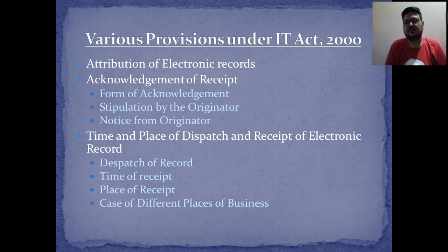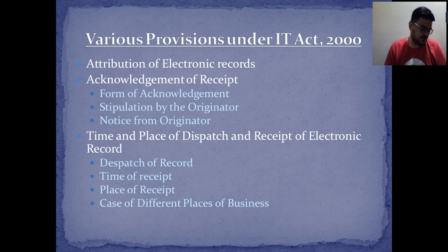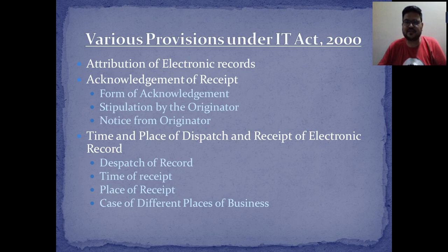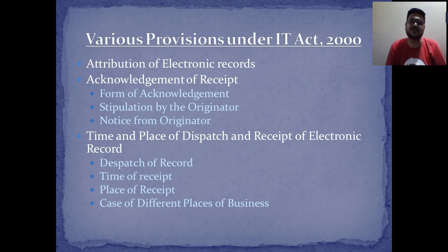These are certain forms that have to be filled when doing any online transaction — whether a purchase or sale. If you are making any transaction online, you have to make arrangements for acknowledgement, stipulation by the originator, and notice from originator. Also covered is the time and place of dispatch and receipt of electronic records — dispatch time, receipt time, place of receipt, and cases involving different places of business must all be mentioned in electronic form.